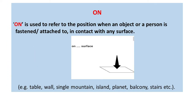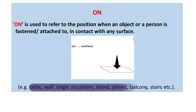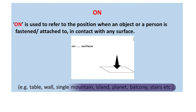Let us now learn about the usage of the preposition 'on'. The preposition 'on' is used to refer to the position when an object or a person is fastened, attached to, or in contact with any surface. That surface could be a table, wall, single mountain, island, planet, balcony, stairs, etc.